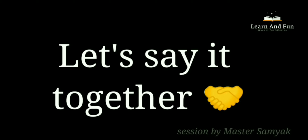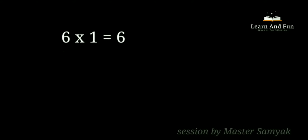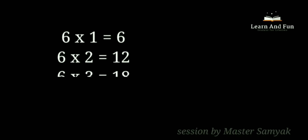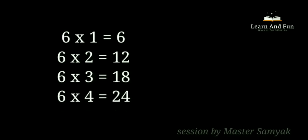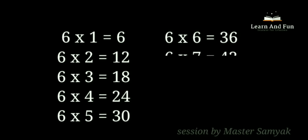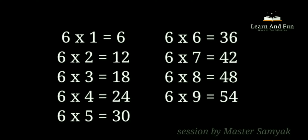Let's say it together. 6 ones are 6. 6 twos are 12. 6 threes are 18. 6 fours are 24. 6 fives are 30. 6 sixes are 36. 6 sevens are 42. 6 eights are 48. 6 nines are 54. 6 tens are 60.